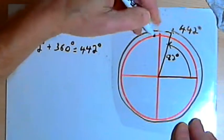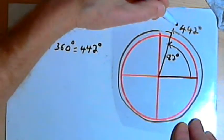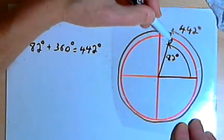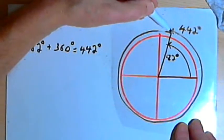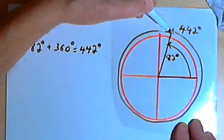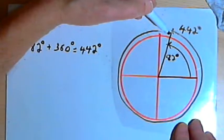Now since both of these angles, the 82 degrees and the 442 degrees, ended up in exactly the same place, since they terminated in the same place, we say that these two angles are coterminal.